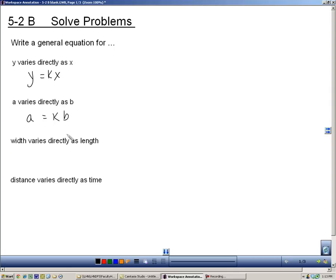So how would you write width varies directly as length? Something like that. Width equals kl. And then distance varies directly as time, d equals kt.